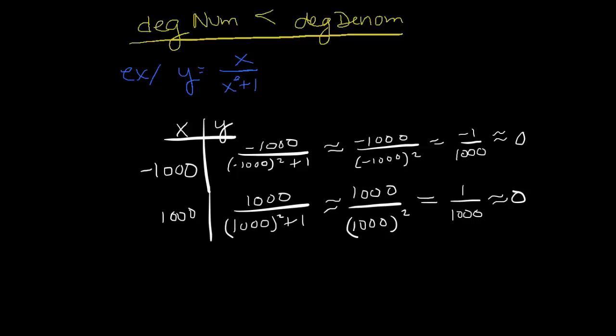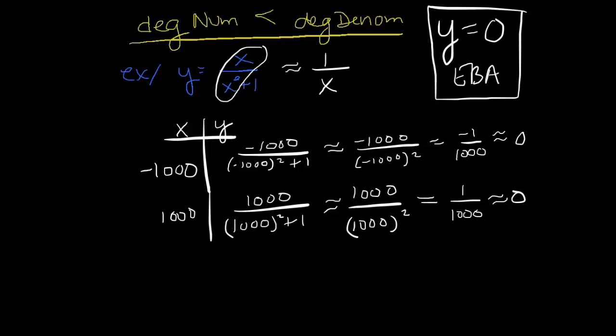So whenever this happens, it's really like we're looking at 1 over x or maybe even 1 over x squared. This is the part of the function that's affecting the end behavior. So if this happens, what's nice is the EBA, or the end behavior asymptote, will always be y equals 0 if the degree of the numerator is less than the degree of the denominator. So that was one case.